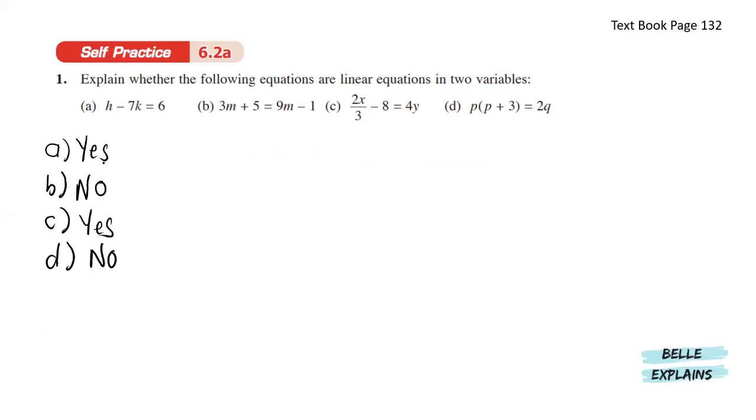Next, 3m plus 5 equals 9m minus 1. In this equation, there is only one variable. So it is not a linear equation in two variables.